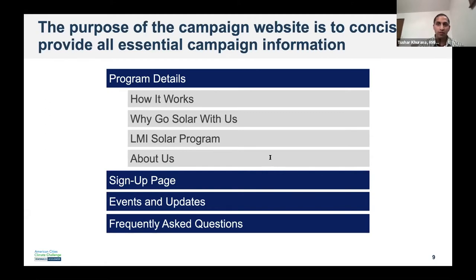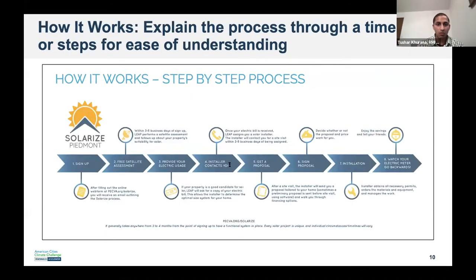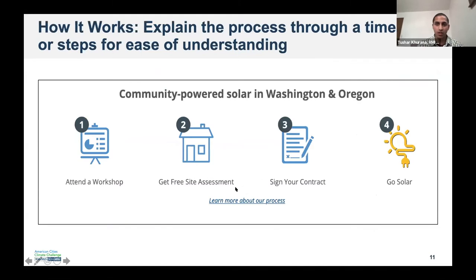You'll also want a frequently asked questions section to field common queries, and contact information for more detailed requests. Most websites start with a description of Solarize — something like a 'how it works' section where you explain how the campaign works. A number of websites use either a timeline or graphical steps so participants really know what the campaign looks like on their end. This part of the website is educational, so we're trying to strike the balance between including enough details but not getting too complicated.